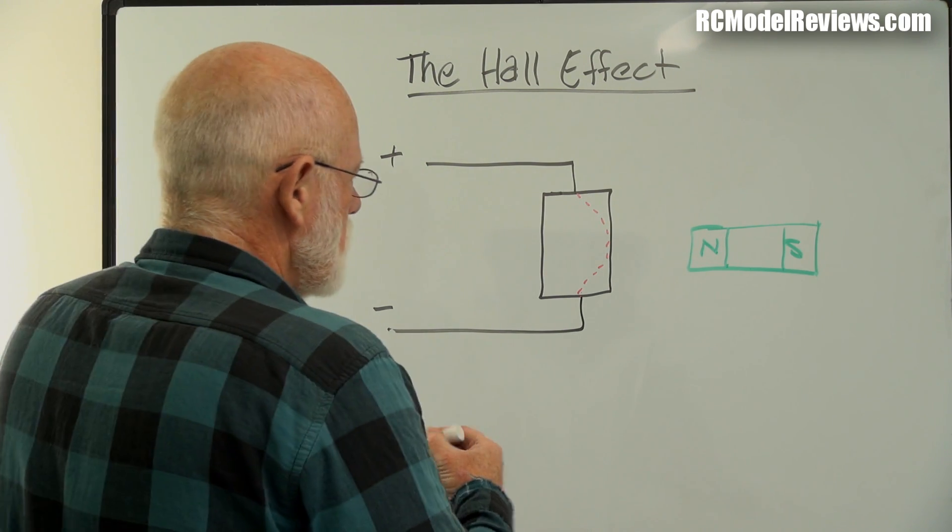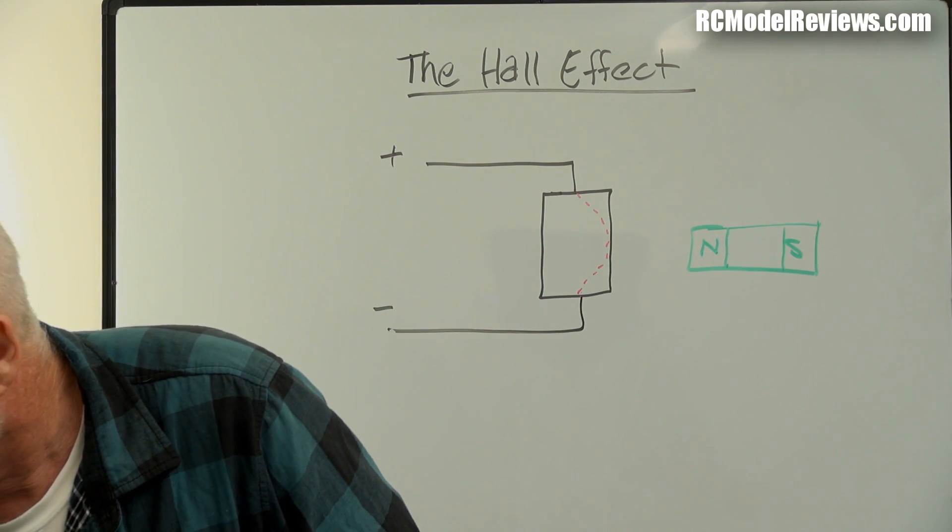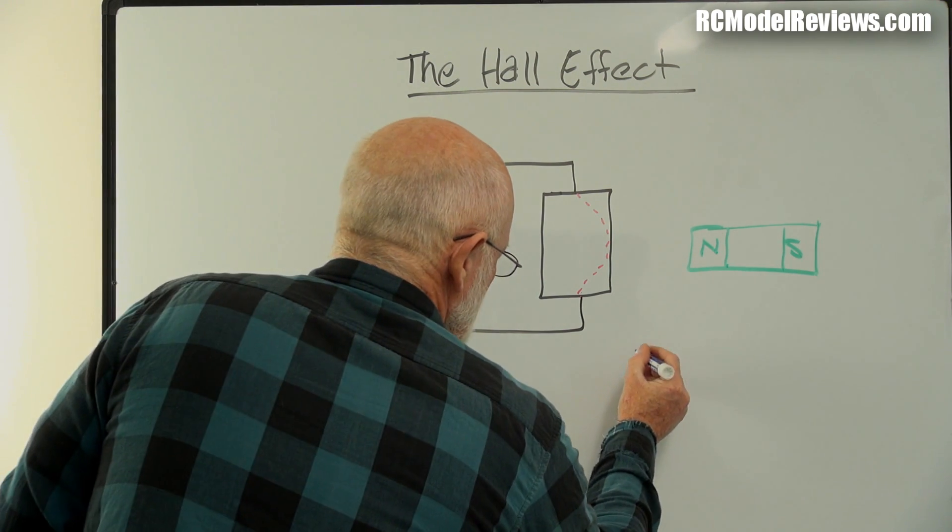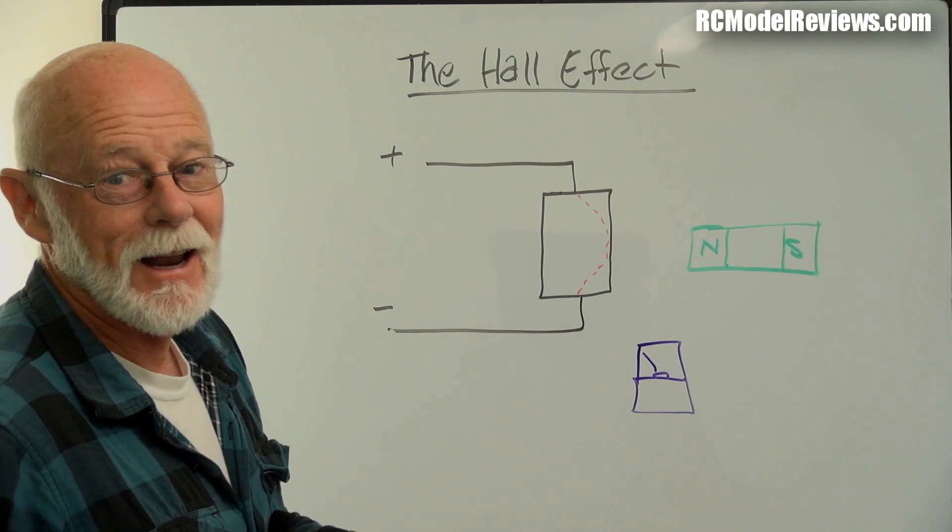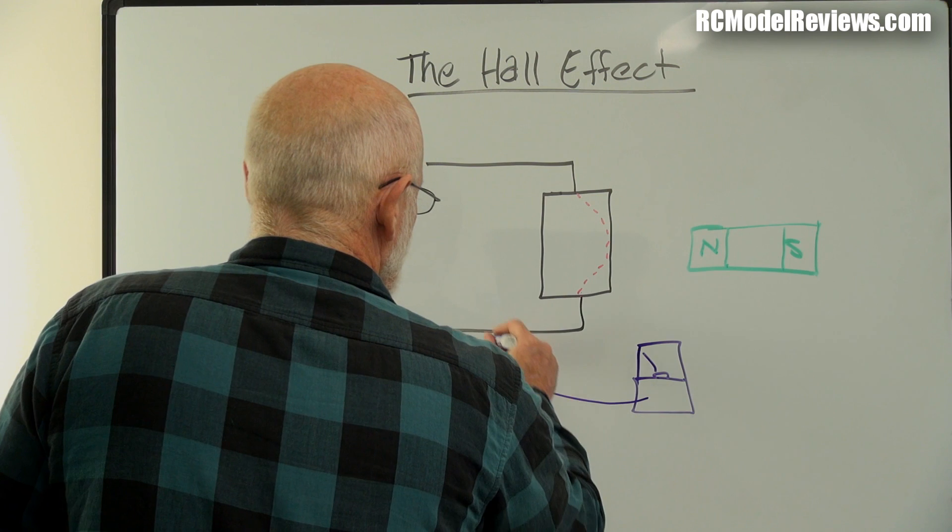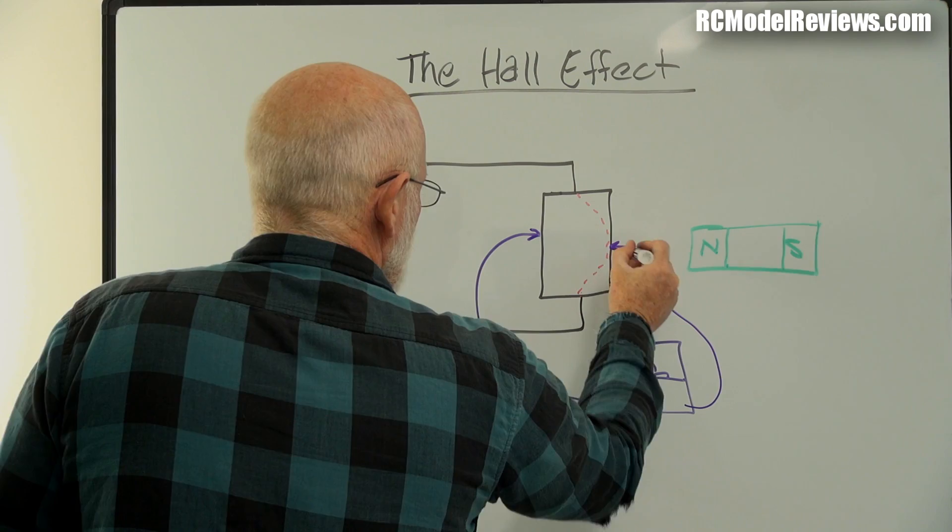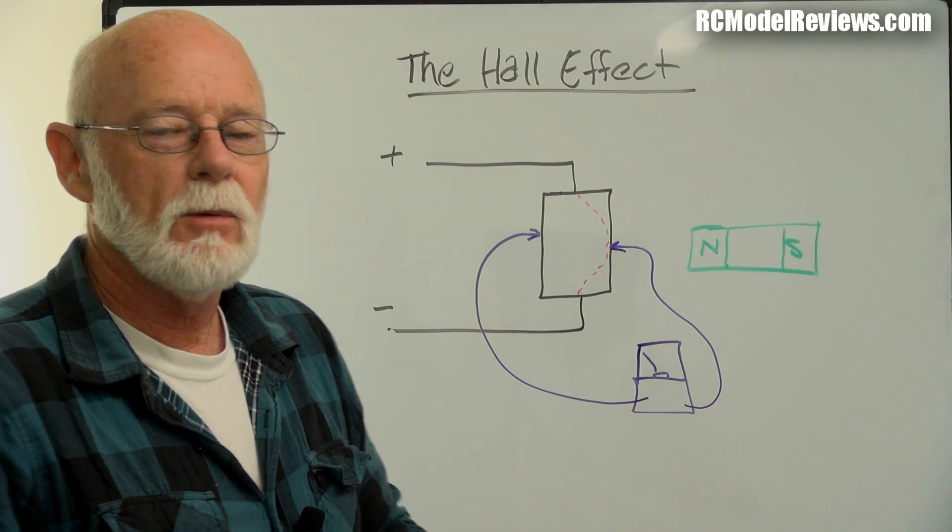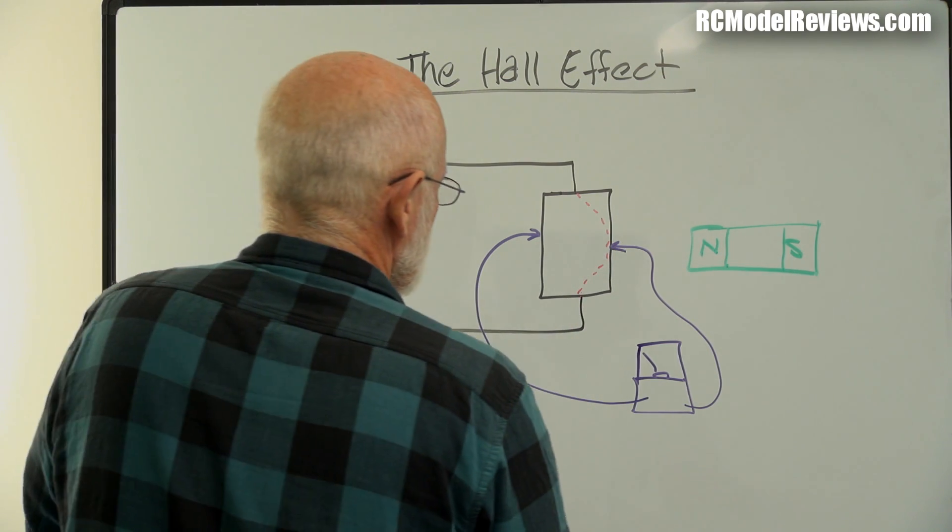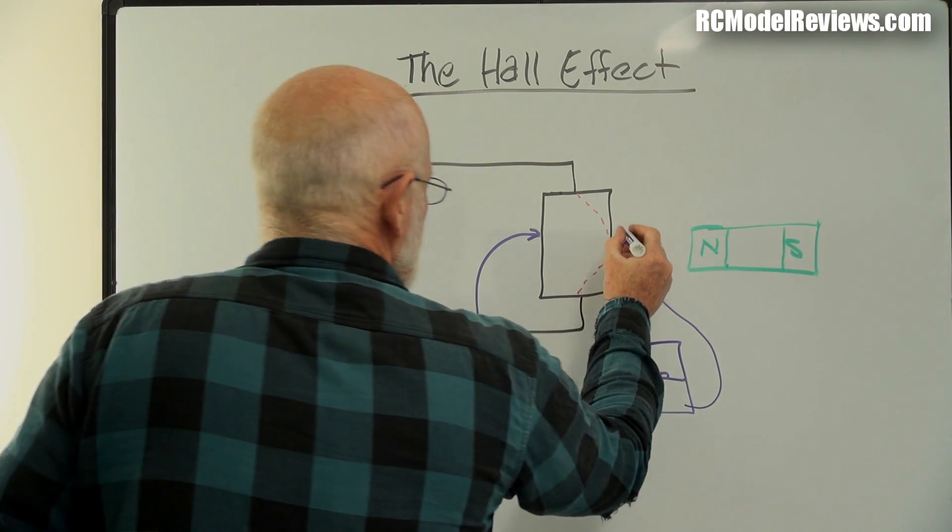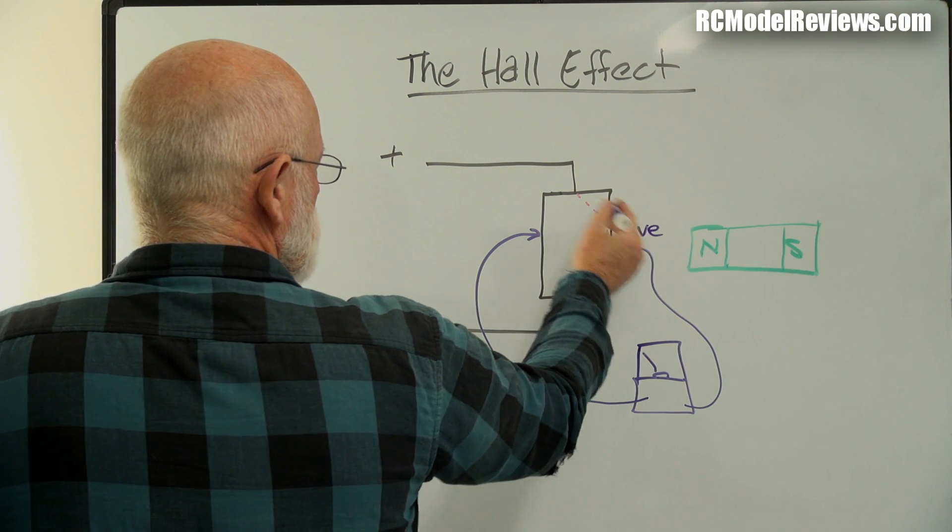What happens when you have an abundance of electrons? You get a negative charge. So if we were to put a meter on here - I'll use a different color. Let's assume we take a little multimeter, an old one with a needle. Let's assume we take one lead and put it on there, and the other lead and put it on there. What are we going to get?